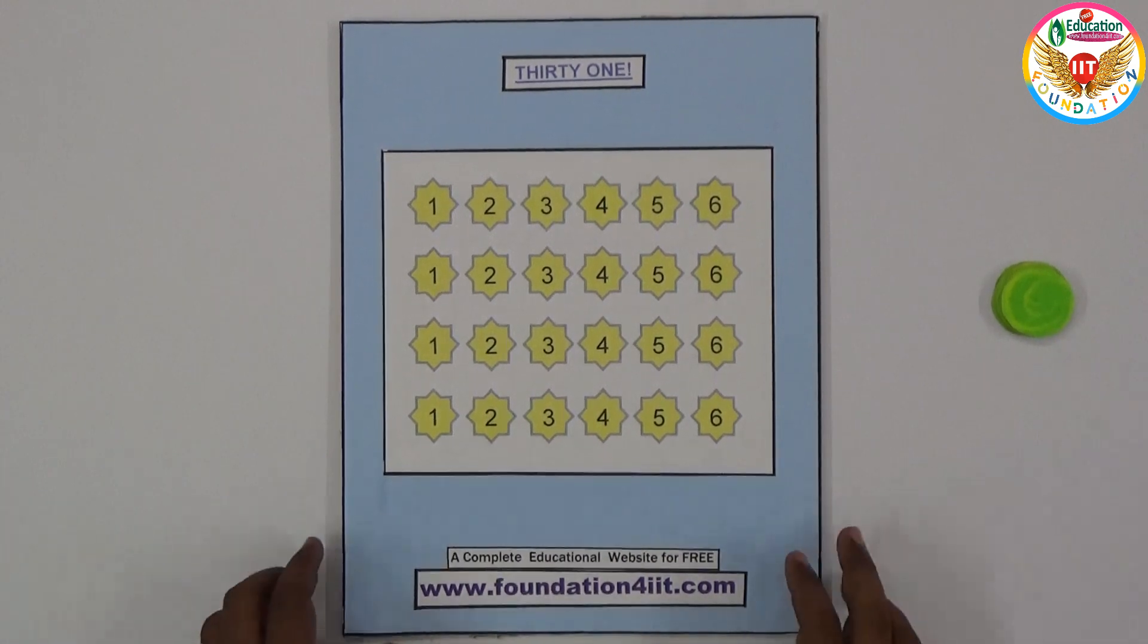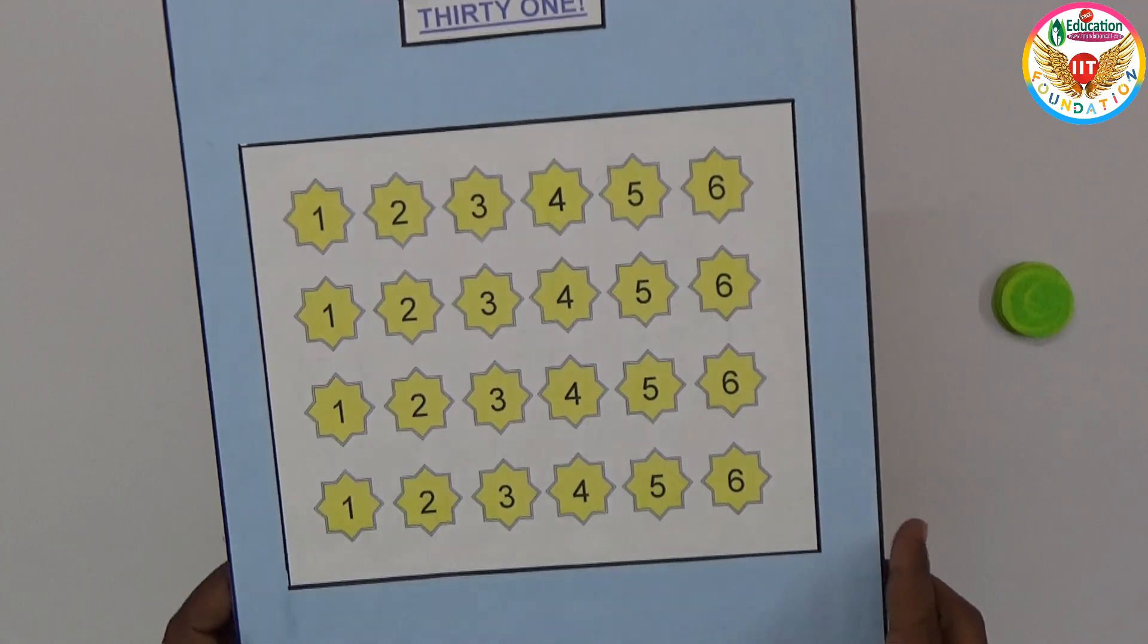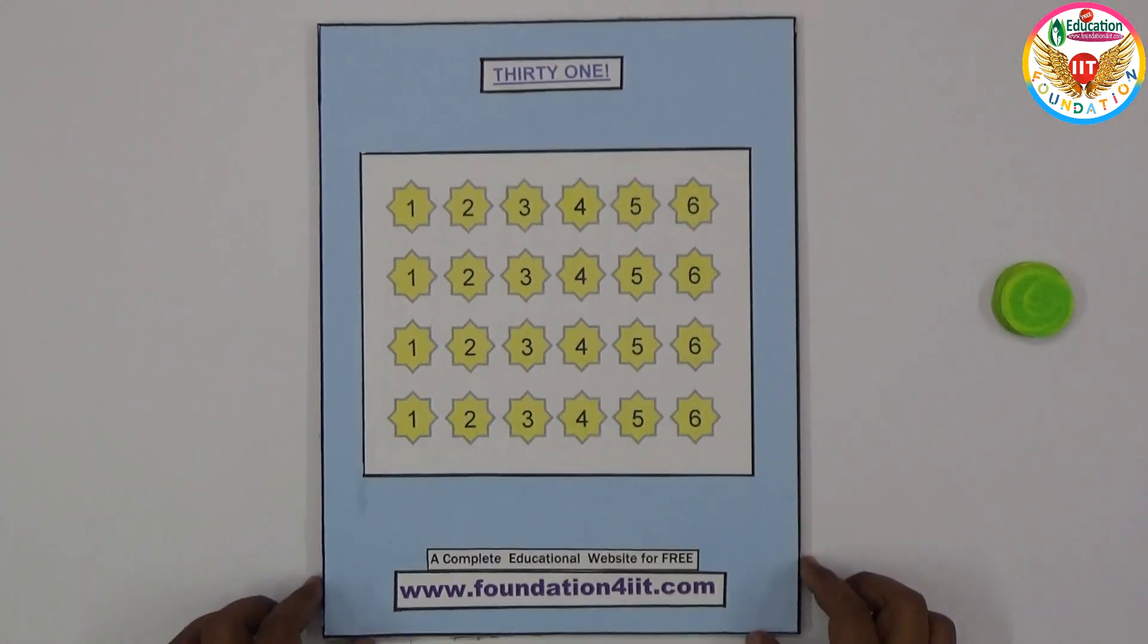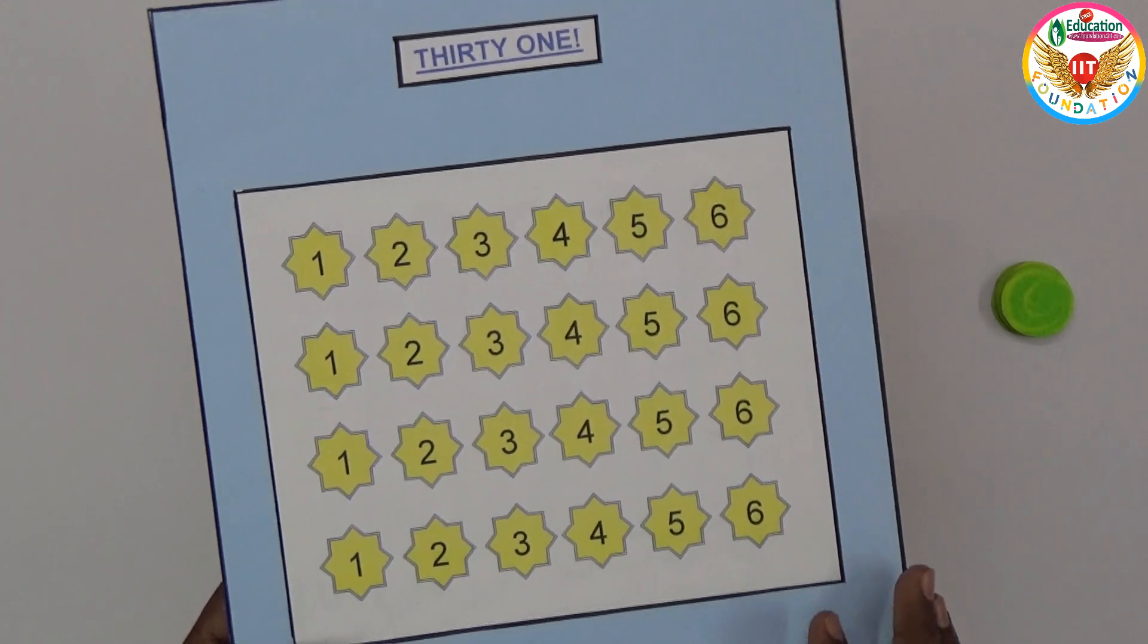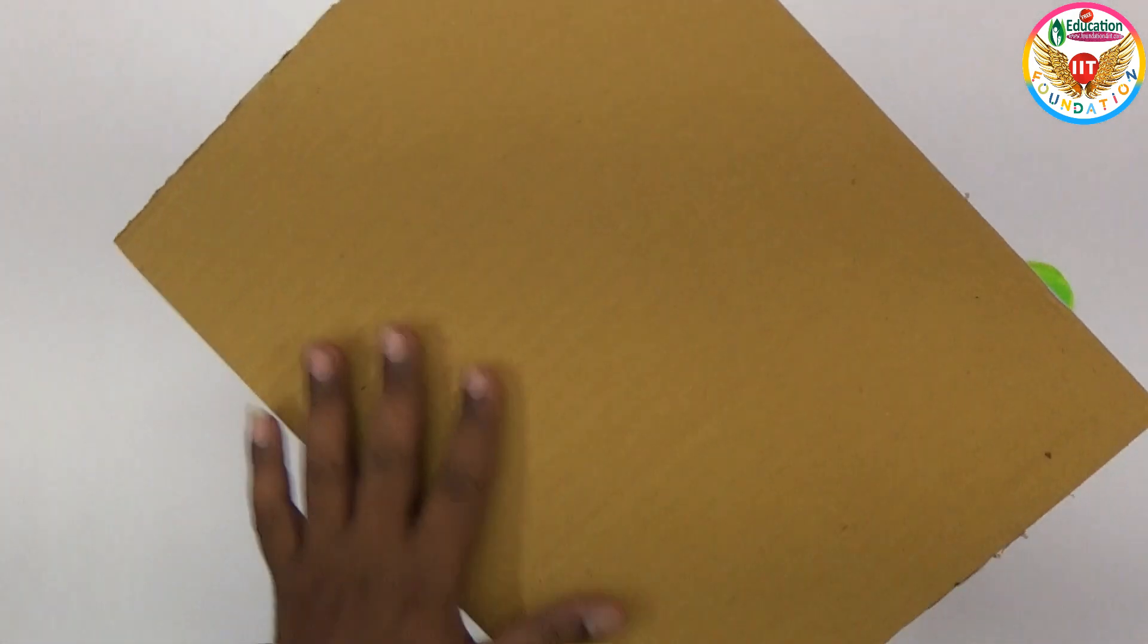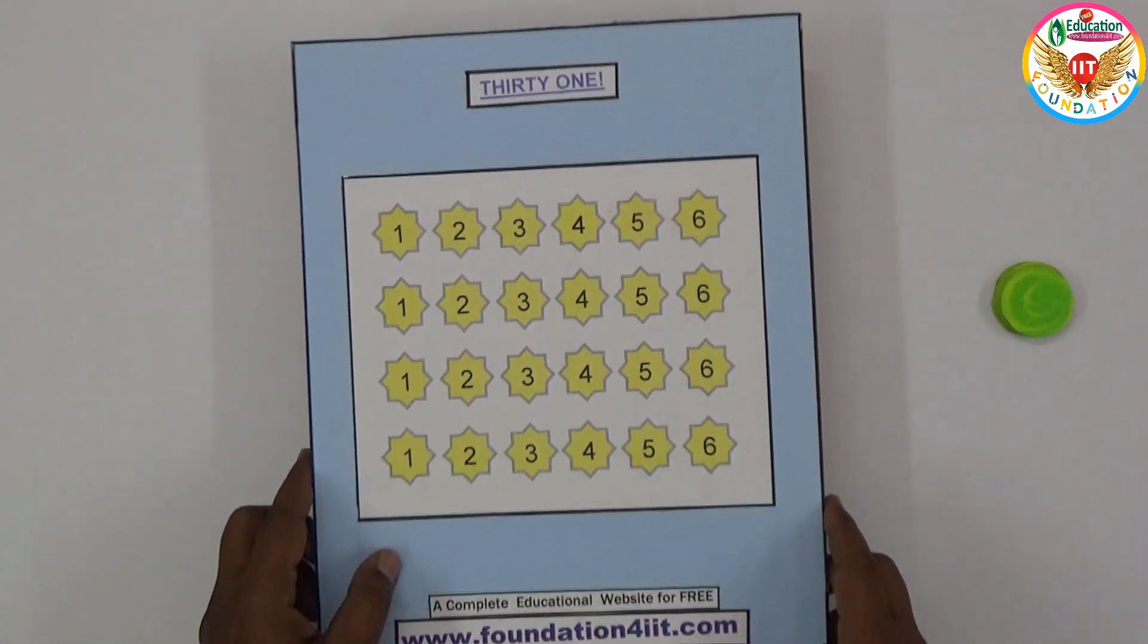Welcome to educational channel. In this video I will show an interesting math project, a math game specially for primary and upper primary based on addition. Making this project is simple - just on cardboard you can make numbers 1 to 6 in four lines.